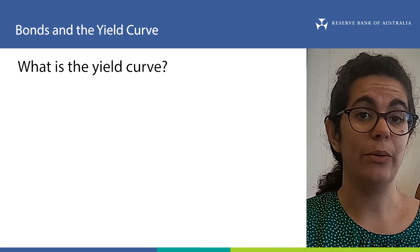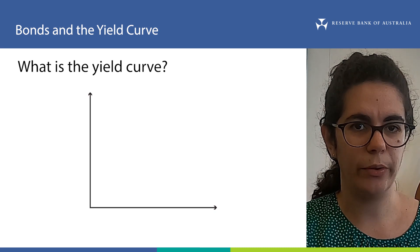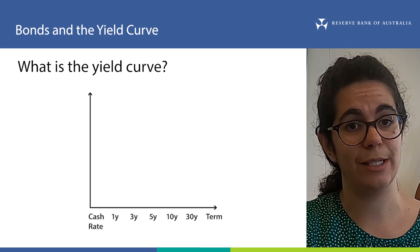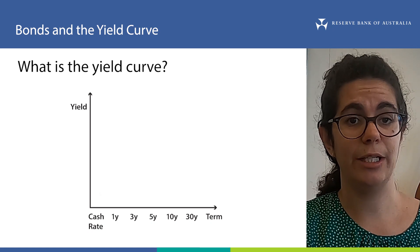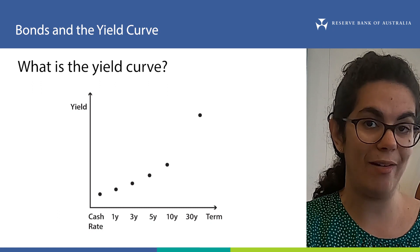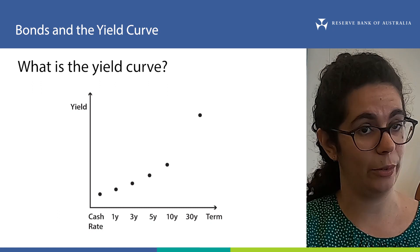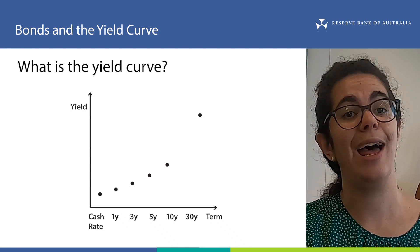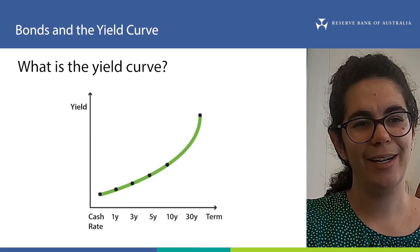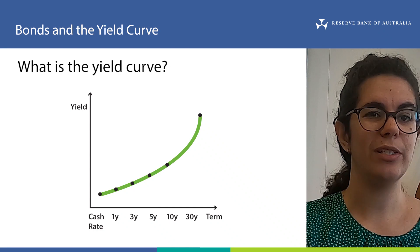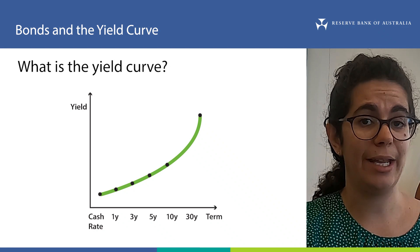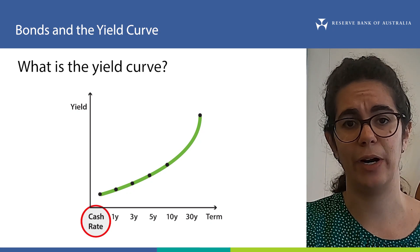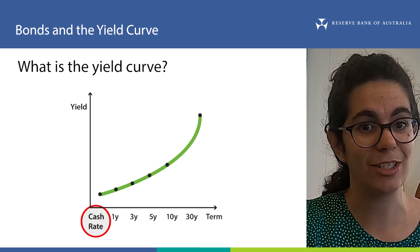Now let's draw a yield curve. To graph one, you put all the terms to maturity along the x-axis and the yield on the y-axis. Starting with the shortest term and continuing to longer terms, calculate the yield on all government bonds with each term to maturity remaining and plot it on the graph. Once you've plotted all these points, draw a curve through the dots — and you have your yield curve. Notice the shortest term on the yield curve is actually not a government bond yield but the RBA cash rate. We anchor the yield curve with the cash rate because it's also considered a risk-free interest rate and it has the shortest term in the economy — it's an overnight rate.